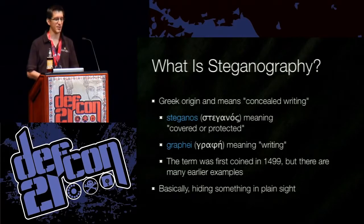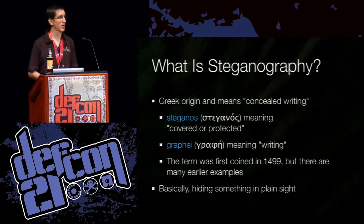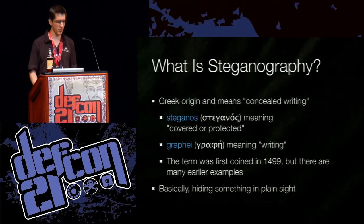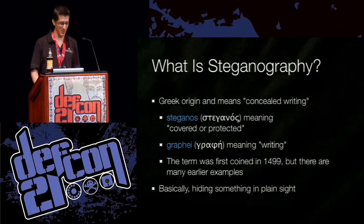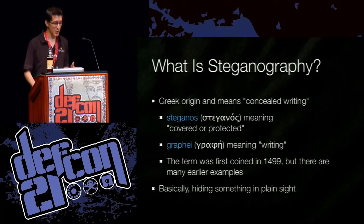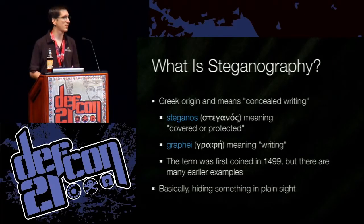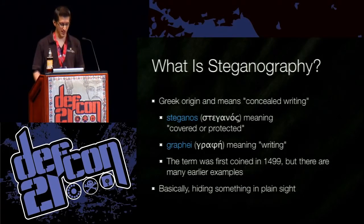What is steganography? The origins of the word are Greek and it means concealed writing. There are two roots of the word: 'steganos' which means covered or protected, and 'graphe' which means writing. I apologize if I'm butchering the Greek — I may have Greek roots but I've never spoken the language. Sorry, Grandma. The term was first coined in 1499, but there are many earlier examples of steganographic techniques being used before the word even existed. Basically, it just means hiding something in plain sight.